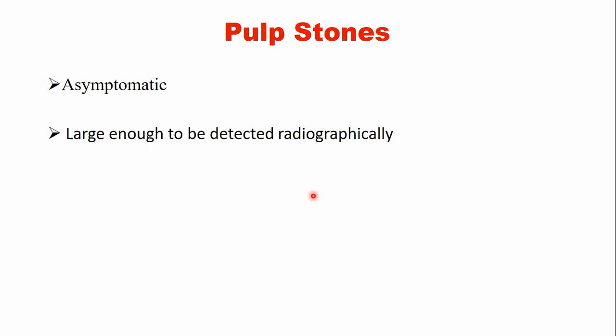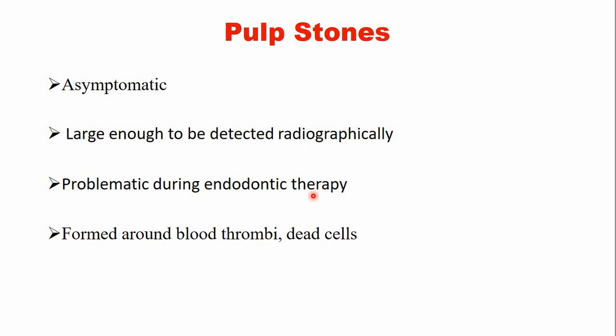Pulp stones are usually asymptomatic. They are rarely detected on a radiograph — to be detected radiographically, they must be of large size and have sufficient mineral density. They rarely cause any problem, but they may cause difficulties during endodontic treatment in which the dental pulp is removed, especially when these stones are present within the radicular pulp. These calcifications are usually found around blood thrombi or dead cells.